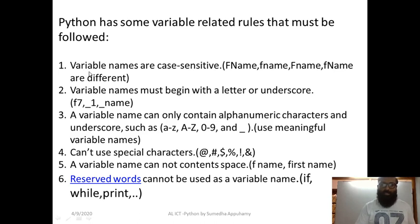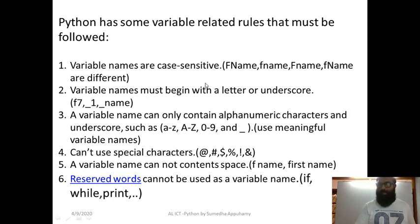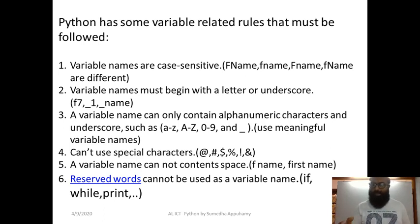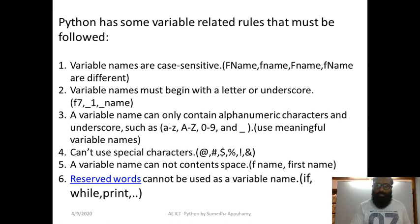Variable names are case sensitive. That means capital F with capital Name, simple F with simple name, capital F with simple name, and simple F with capital name — these are all different variable names. So you can use variable names, but they have to be meaningful. Rather than using FN, you can use 'first_name' or 'fname' or something meaningful. The variables are case sensitive, and these things are identified differently in memory and the CPU.